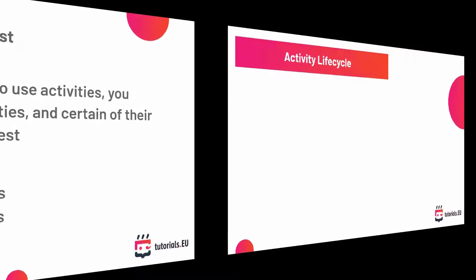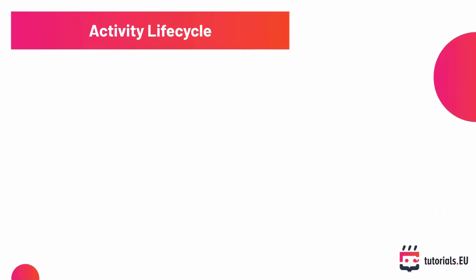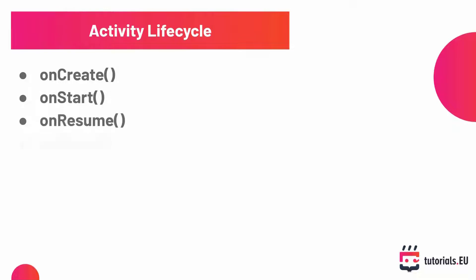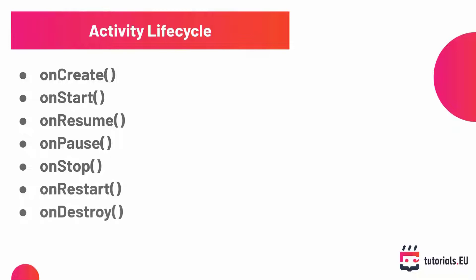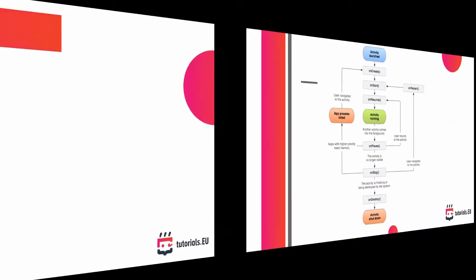You need to declare the activities, declare the intent filters, as well as declare permissions in the Android manifest. You need to specifically state which activity is going to be your entry activity — the activity to which you want to jump when the application gets started. That's a very important aspect. Now let's look at the actual lifecycle. The relevant methods are: onCreate, onStart, onResume, onPause, onStop, onRestart, and finally onDestroy, which is called once your activity is fully destroyed and not going to be reused anymore.